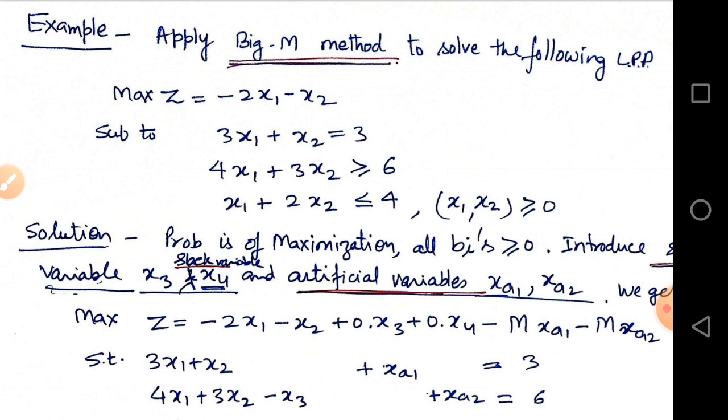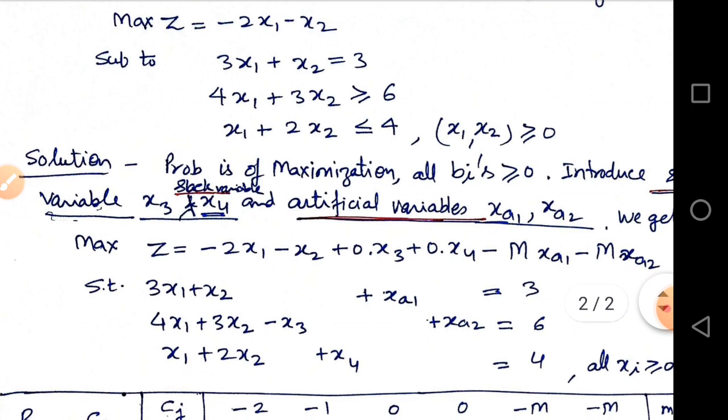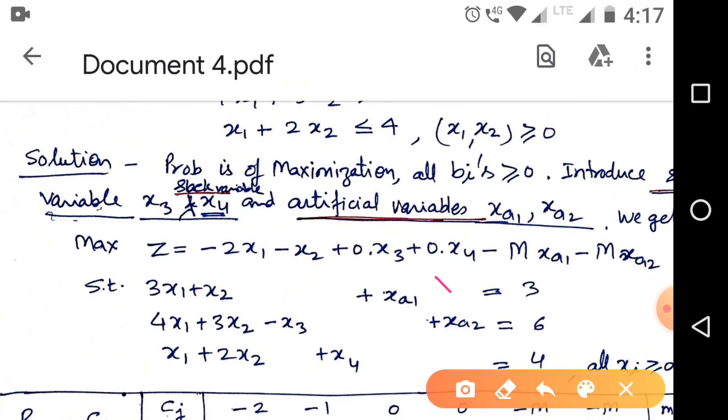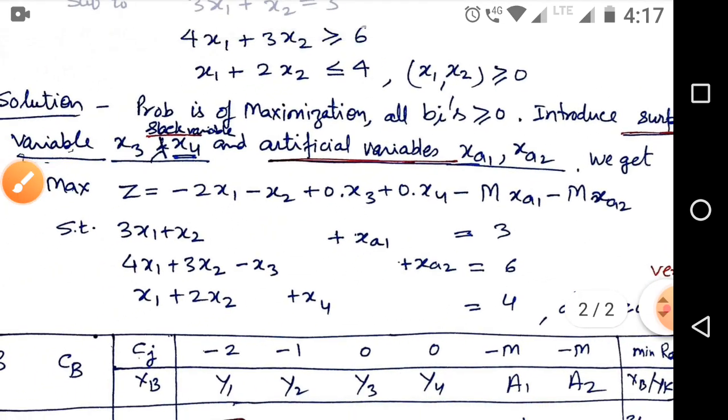For making equality or canonical form, we need artificial variable in first and second constraints, xa1 and xa2.